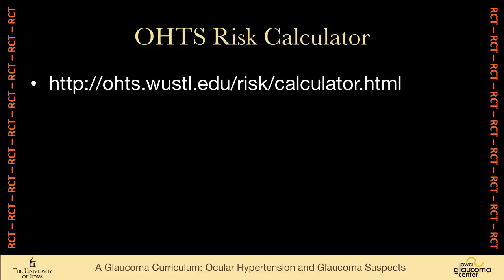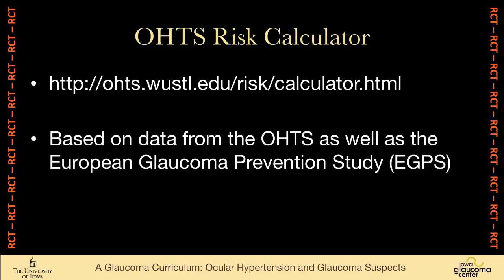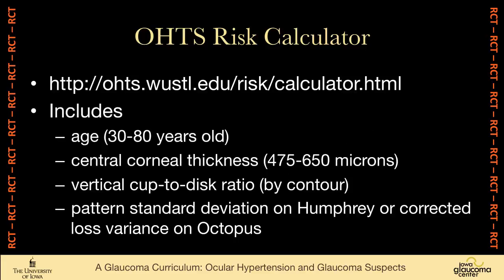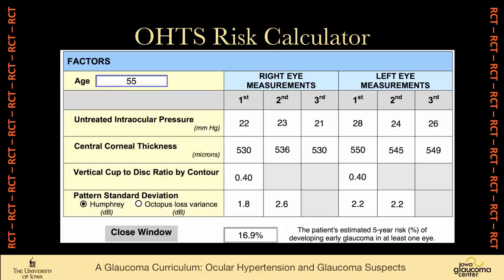The OHTS has developed a risk calculator so one can take features of the patient being evaluated, plug them into the risk calculator, and it'll give an idea of the risk of developing glaucoma. They use data not only from OHTS but also from the European Glaucoma Prevention Study. The website address is shown. One plugs in the age, central corneal thickness, vertical cup-to-disc ratio, and pattern standard deviation on Humphrey or the corrected loss variance on Octopus.